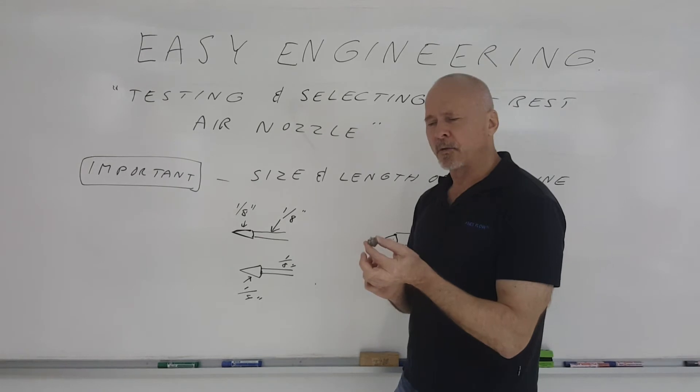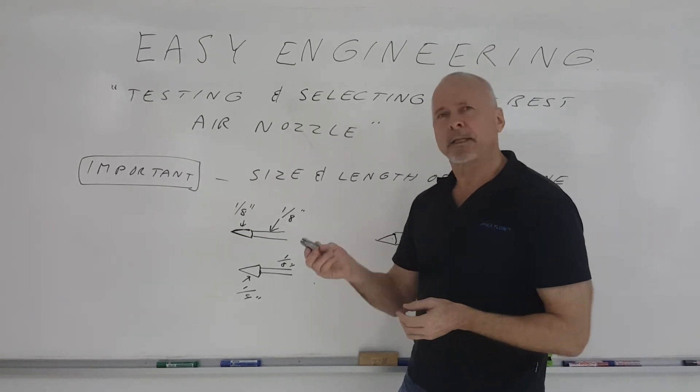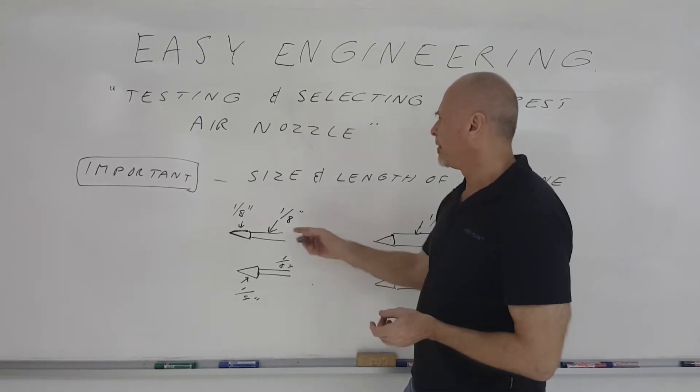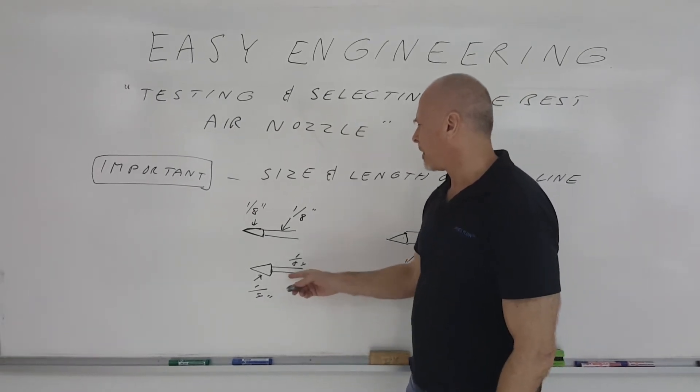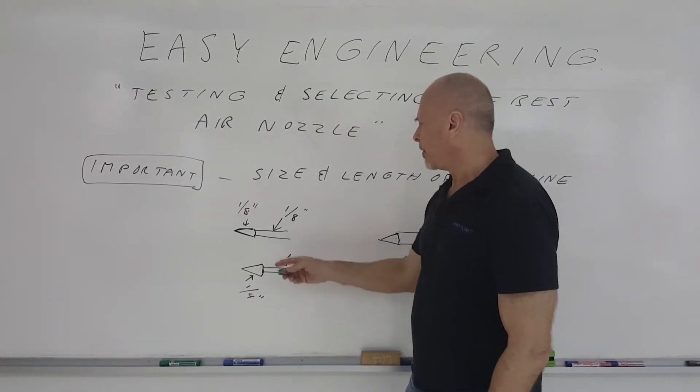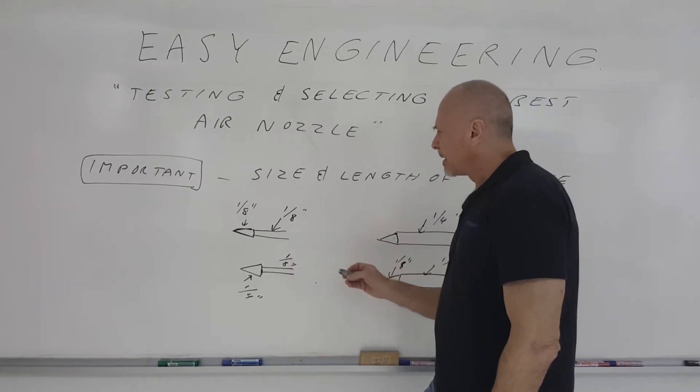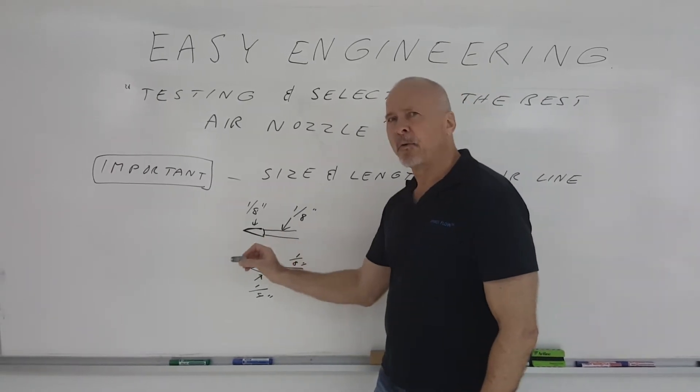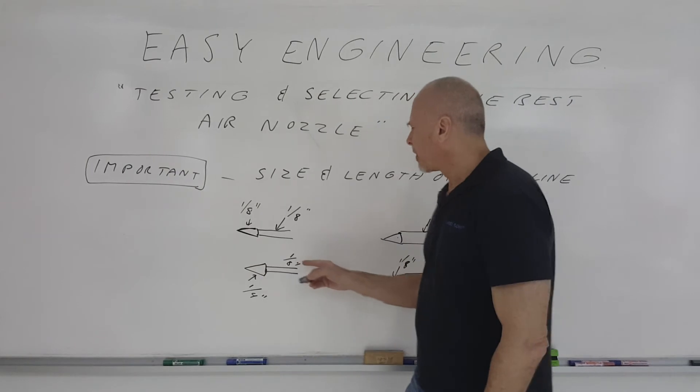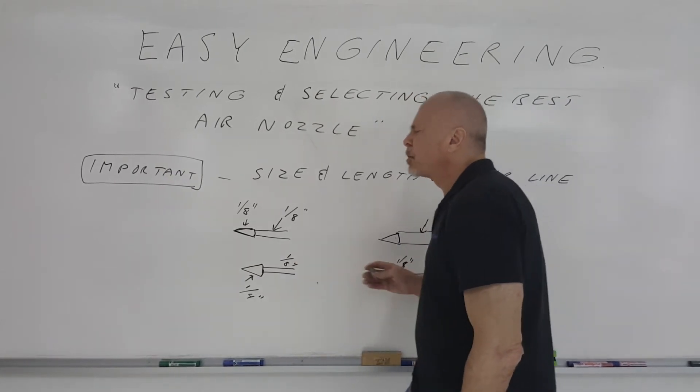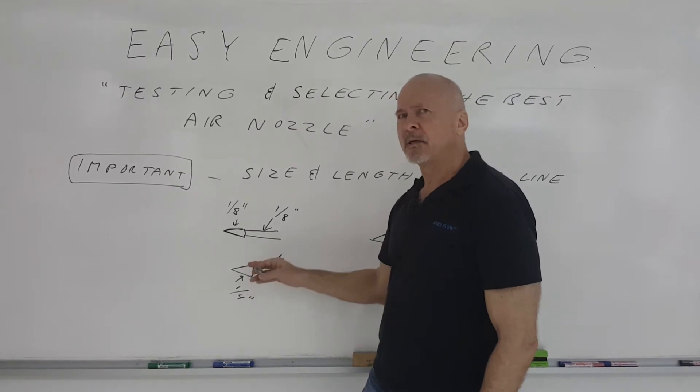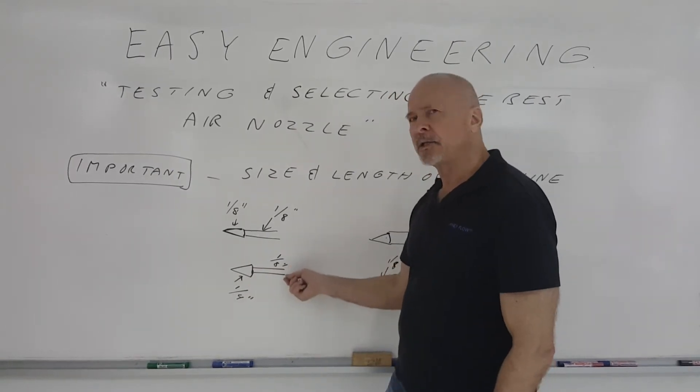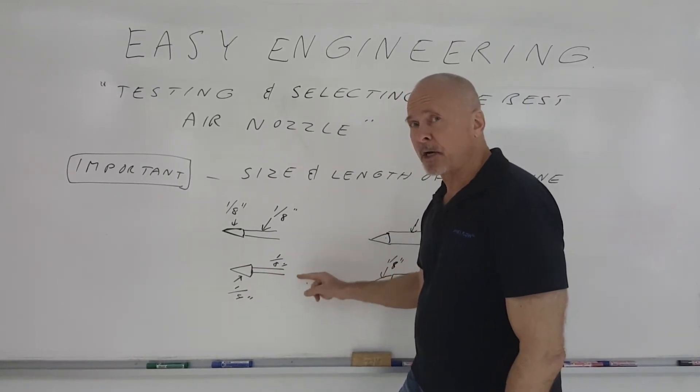So you get the quarter-inch nozzle and the one-eighth inch nozzle and hook them up to your one-eighth inch line. When you test the quarter-inch nozzle on the one-eighth inch line, you're only going to get a certain amount of force going through that nozzle because the one-eighth inch line is trying to force through the flow that the nozzle needs. But because it's a one-eighth inch line, you're going to have a lot of pressure drop in that line.